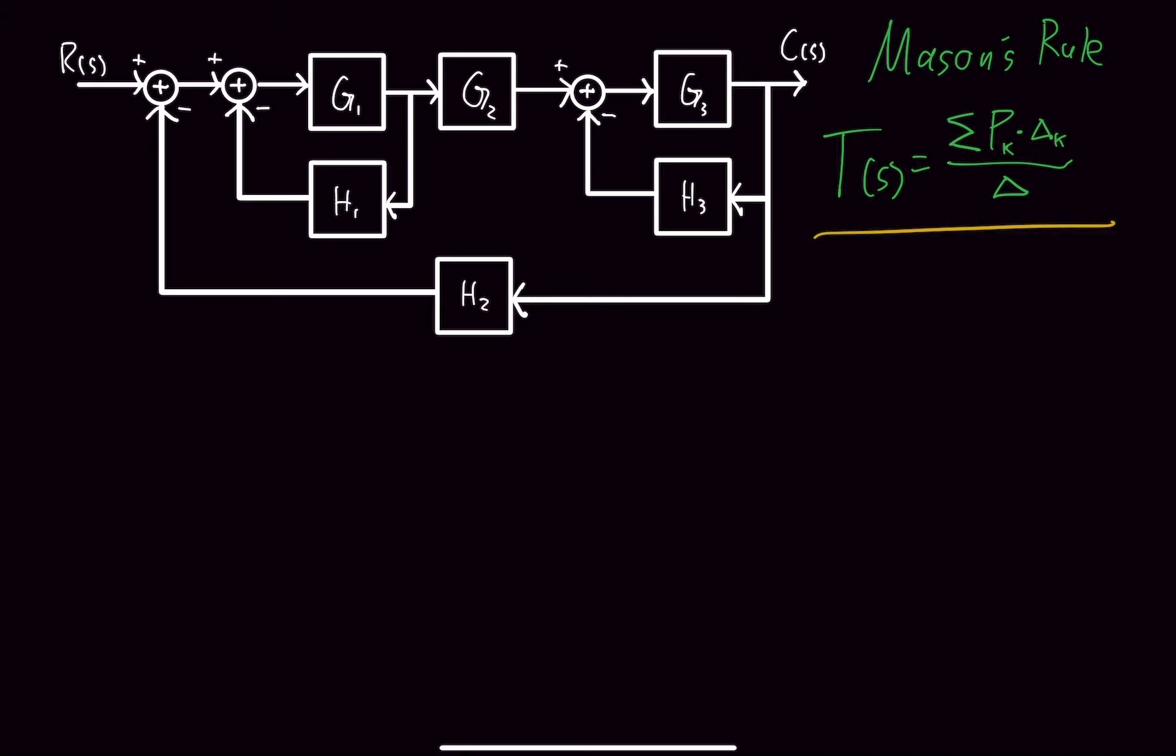The very first thing we need to do is draw our signal flow graph. What we need to do first is find all the intersecting points. So we've got 1 here, 2 here, 3 here, 4 here, and 5.